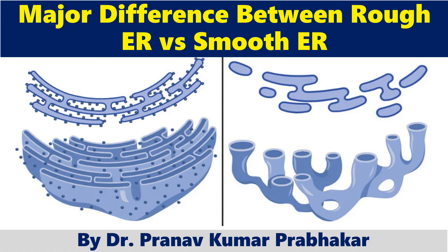We know that endoplasmic reticulum is one of the important cell organelles. The smooth endoplasmic reticulum is known for storing lipid and protein and it is not associated with the ribosomes. As you can see, this is the smooth endoplasmic reticulum where we don't have any ribosomes on the surface. Whereas in case of rough endoplasmic reticulum, it is associated with ribosomes — the dot-like structures you see are the ribosomes — and it also stores protein.